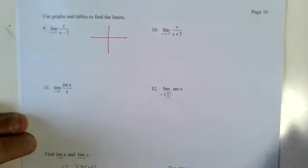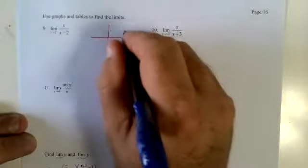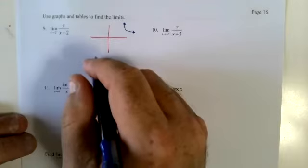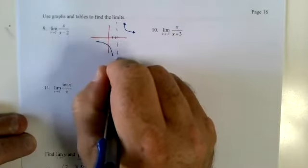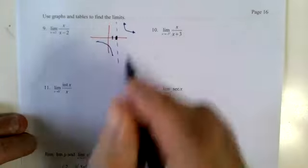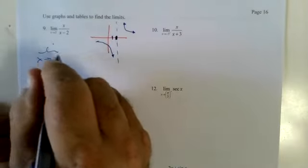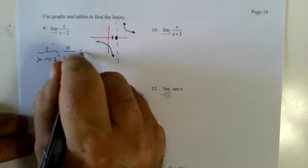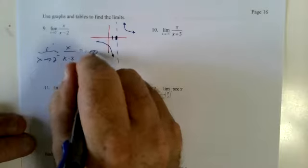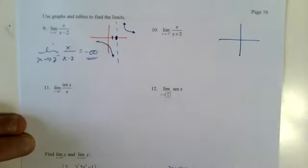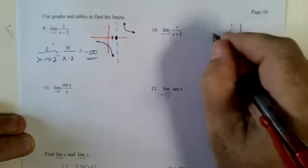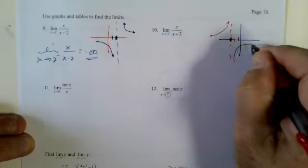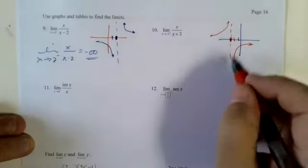I always use graphs; use a table if you want. x over (x minus 2) looks something like this. When we take the limit as x approaches 2 from the negative side of x over (x minus 2), from this side we get negative infinity. For x over (x plus 3), as x approaches negative 3 from the positive side, it's going to be negative infinity.